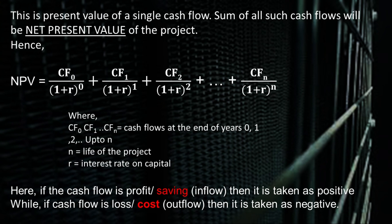For example, CF0 is the initial investment, which is the initial cost, and it is taken as negative. And (1 + r) raised to 0 — anything raised to 0 will become 1. Hence, the first term will be minus times the initial cost, and so on. Here, r will be the interest rate on capital and n is the life of the project. Cash inflows or profit or savings are taken as positive, while cash outflows or loss or cost are taken as negative.